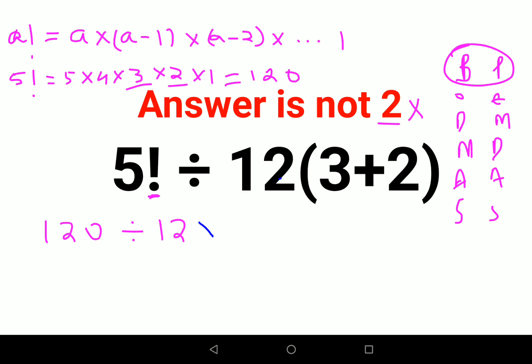And since there is no sign of multiplication between 12 and this bracket, we will take the sign as multiplication and then we write the value of the bracket, which is 5.